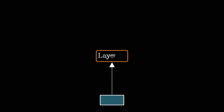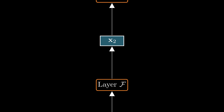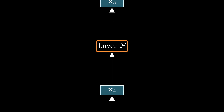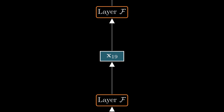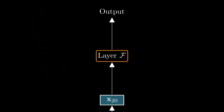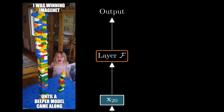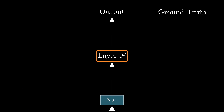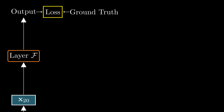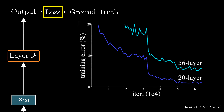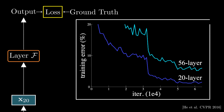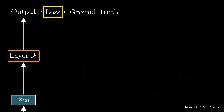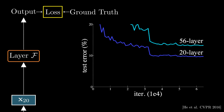The representational power of a deep neural network comes from stacking nonlinear layers. Intuitively, deeper models should learn more complex and expressive representations and yield better results. But deeper neural networks are more difficult to train. When we stack more layers, deeper models often have higher training errors, leading to poor performance on test data as well.